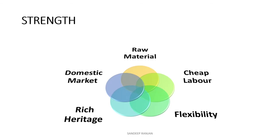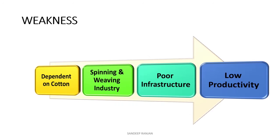Next, weakness. India is completely dependent on cotton, and because of over-specialization in cotton, the bulk of the international market is missed. The spinning and weaving industry is lacking in modernization and new technologies. There is also poor infrastructure, high power costs, and long lead times on exports, which erode the competitiveness of India's exports across the textile chain.